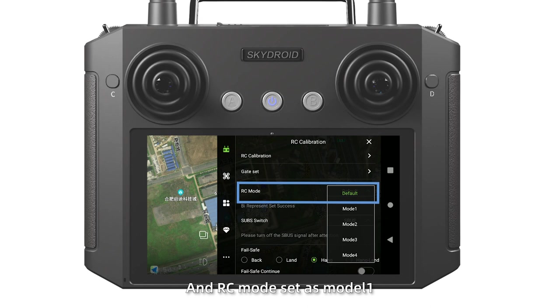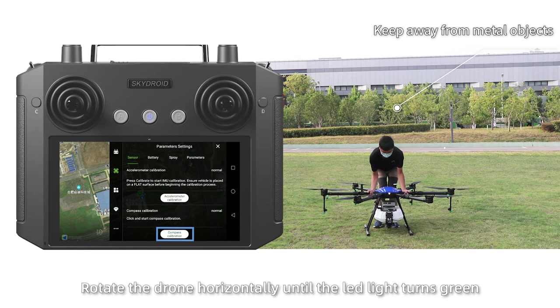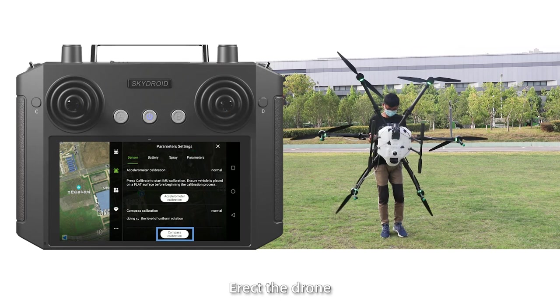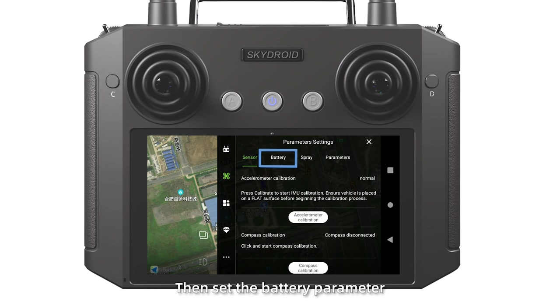Step 5: Click the second icon on the left. Click compass calibration in the sensor page. Rotate the drone horizontally until the LED light turns green. Erect the drone. Continue to rotate until the LED light flashes. Then put down. Power off and on again to complete the calibration. Then set the battery parameter.